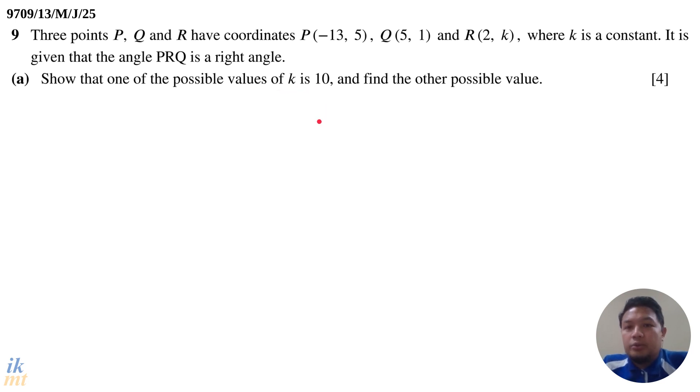I'm just going to show you how it's done. We use the fact that angle PRQ is a right angle. That means that the gradient of PR multiplied with the gradient of RQ is equal to negative 1. The property of the gradient of perpendicular lines - when you multiply their gradients together, you'll get negative 1.